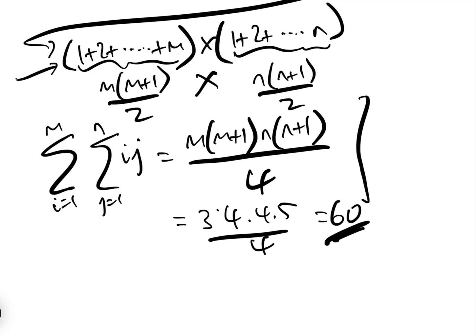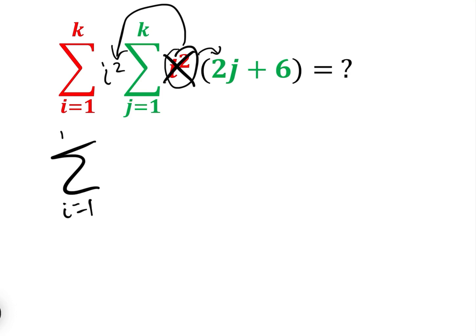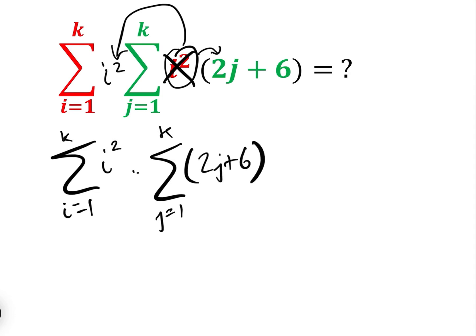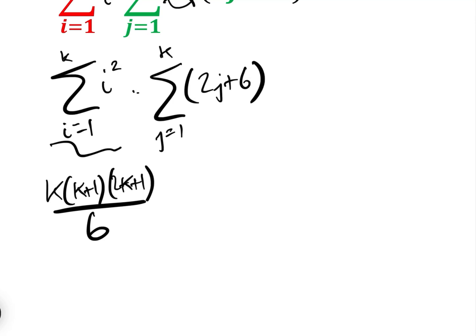The beauty of this method is that we can apply it to far more complicated double summations. Consider the sum from i=1 to k, sum from j=1 to k, of i²×(2j+6). Since i² is multiplying the inner expression, we can move it out, giving us: (sum from i=1 to k of i²) × (sum from j=1 to k of 2j+6). The sum from i=1 to k of i² is the sum of the first k squares, which is the well-known formula k(k+1)(2k+1)/6.